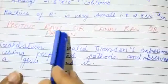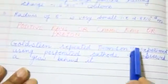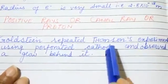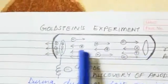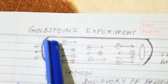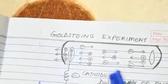Now, come to the positive ray, canal ray or proton. Goldstein repeated Thomson experiment using perforated cathode and observed the glow behind it. Goldstein took same discharge tube. In this discharge tube, the cathode ray is perforated. Perforated means it contains holes.